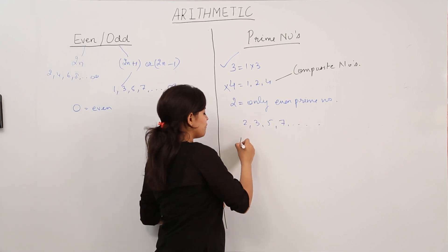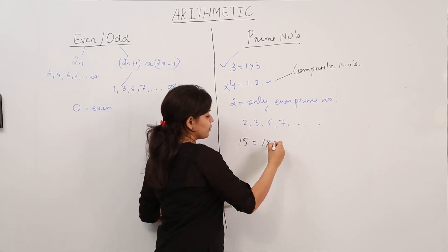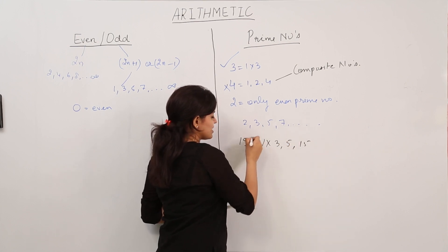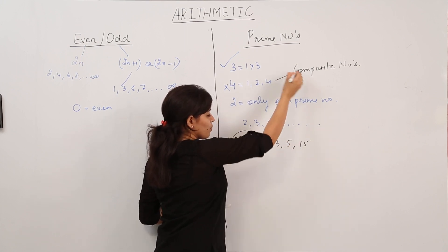Let's say the number 15. The factors of 15 are 1, 3, 5, and 15. So we can say that 15 is a composite number.